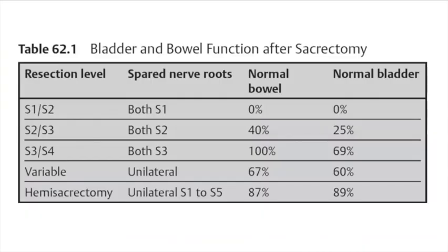Regarding bladder and bowel function: if both S1 nerve roots are sacrificed, there is essentially a zero percent chance of normal bowel and bladder function. The more distal the level of sacral resection, the higher the chance of functional preservation.